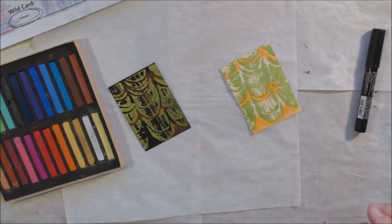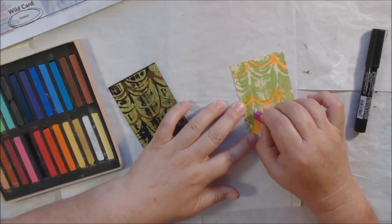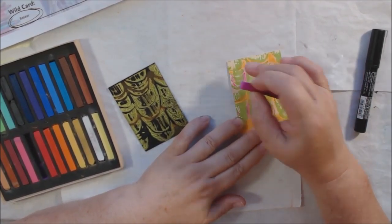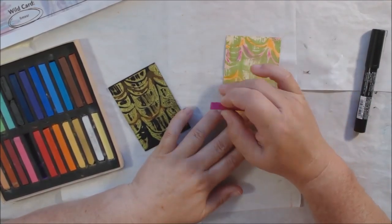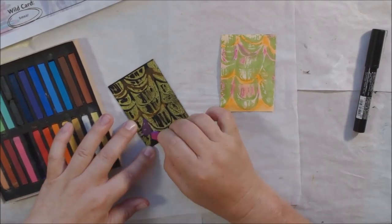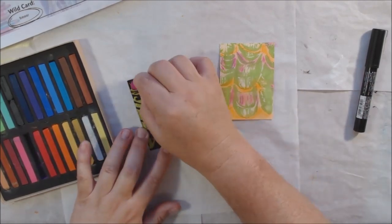I got out some pastels, these are chalk, and I was wanting to see what they would look like. Oftentimes when you use this type of product you can use a tortillion to smear it. I decided to just use my hands.